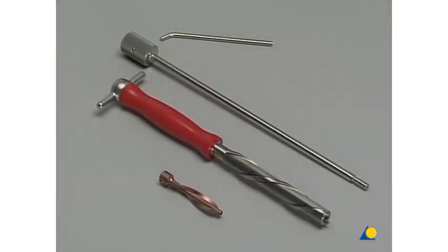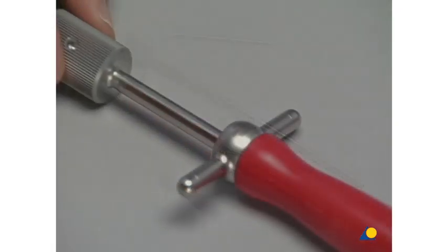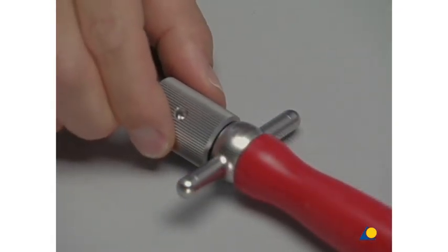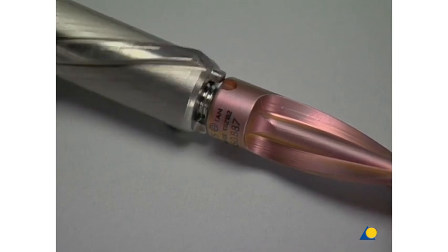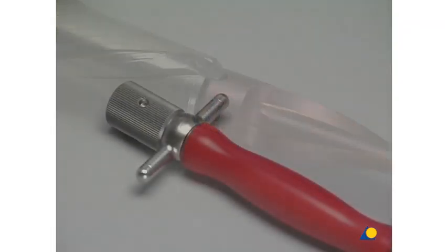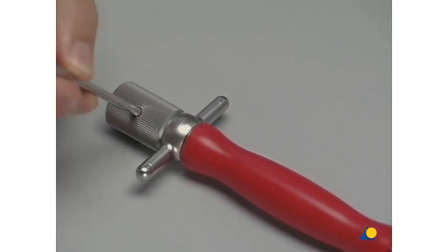The spiral blade is mounted onto the spiral inserter by first sliding the connecting screw into the inserter, then placing the spiral blade over the teeth of the spiral inserter and tightening the connecting screw using the pin wrench.